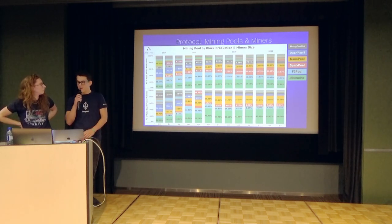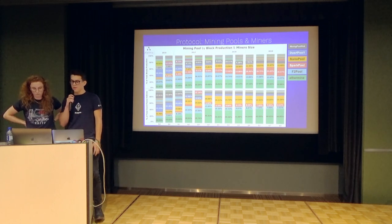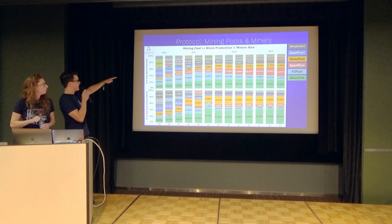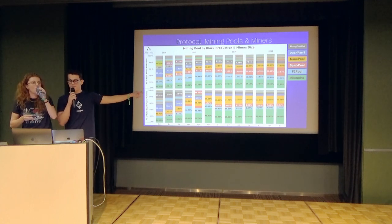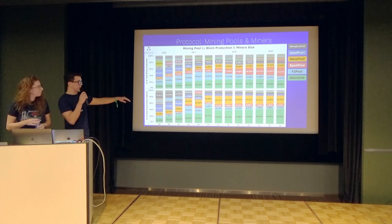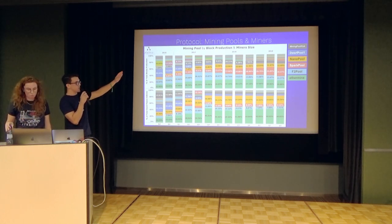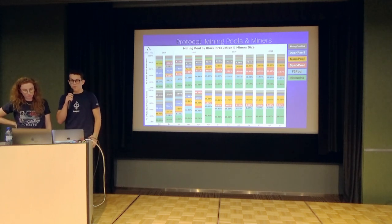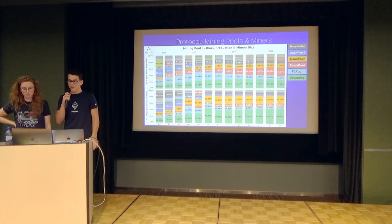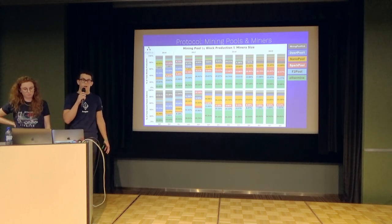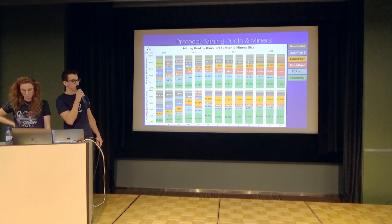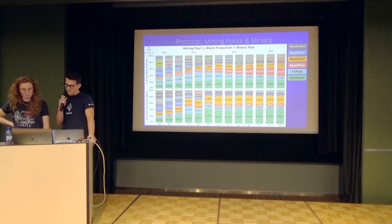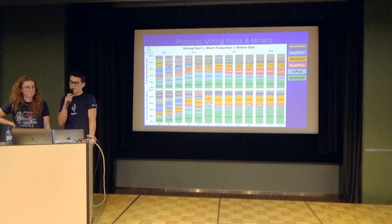These two graphs show the growing concentration of mining pools over time, as measured by percentage of total block production on the top graph, and the percentage of total miners being paid out on the bottom graph. Each color corresponds to the same mining pool. Over time, four pools have really started to dominate the mining pool landscape: ETH mine, F2 Pool, Spark Pool, and Nano Pool. Collectively, they've edged out past previous competitors like Mining Pool Hub and Dwarf Pool, which you can barely see in the past few quarters. Those four major pools now account for over 72% of quarterly block production.